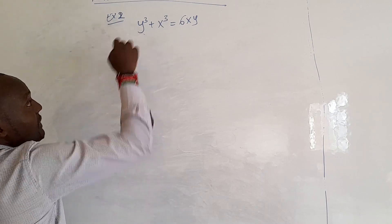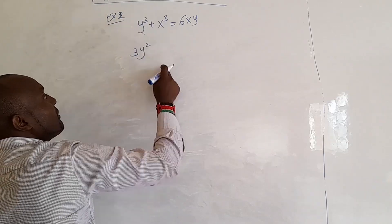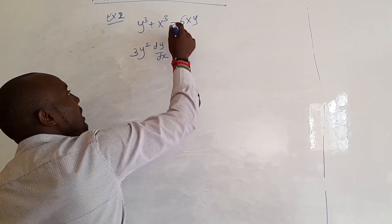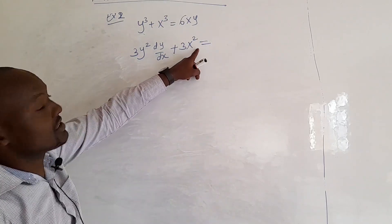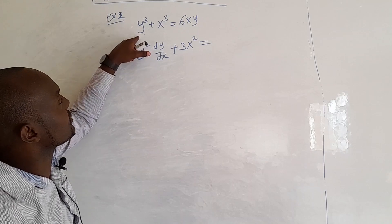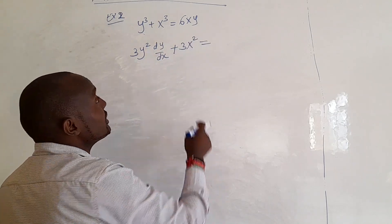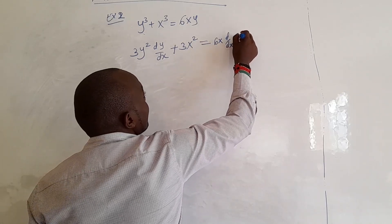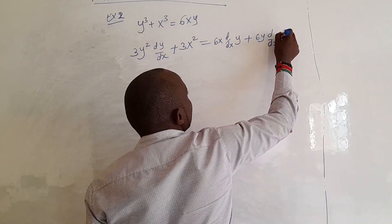How do we solve this one? Again, whenever we have y we differentiate it normally: bring 3 down then y to power 2, and we add dy/dx. For the x cubed term, bring 3 down to get x squared — we do not add dy/dx because it is a function of x only. For the 6xy term we use the product rule.